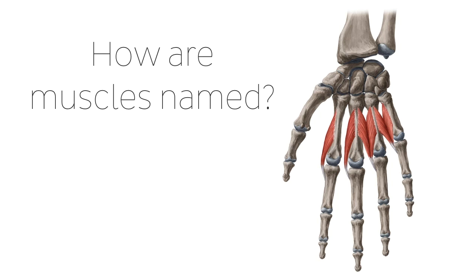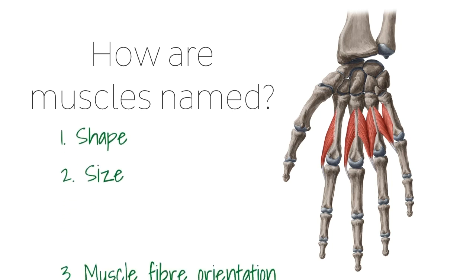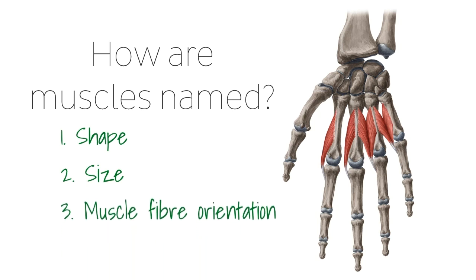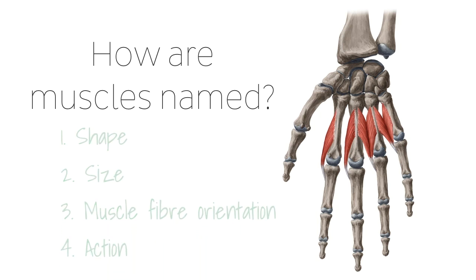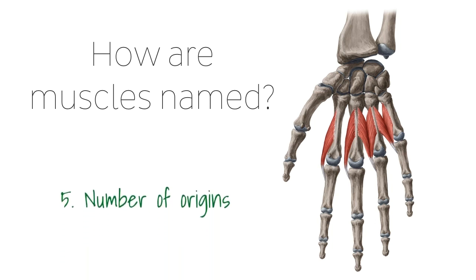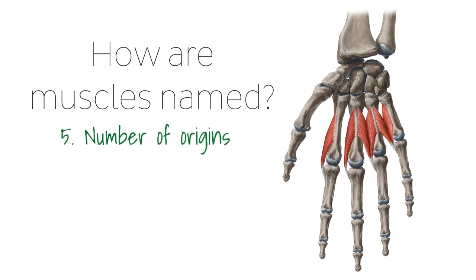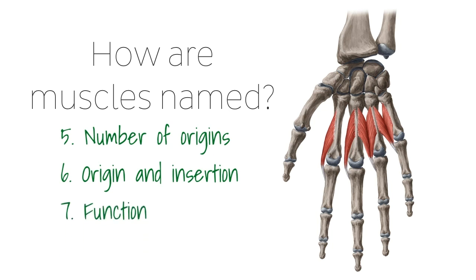There are a few basic conventions when it comes to the naming of a muscle. Once you understand these basic conventions, it becomes much easier to identify a muscle. In the following slides we will look at some of the basic methods used to name or derive the name of a muscle, which usually take into account one or more characteristics of the muscle, ranging from its size to its function.